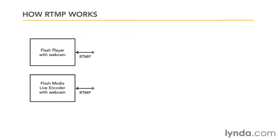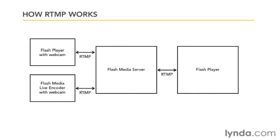Here's a bird's-eye view of how RTMP works. First, the Flash Player contacts the FMS server, and an RTMP connection is opened between them. Then the Flash Player requests a specific video stream. This could be a pre-recorded stream stored on the FMS server itself, or a live stream being broadcast either from another connected Flash client or from a Flash Media Live Encoder. Once FMS receives the request for the stream, it's sent directly to the Flash Player over the RTMP connection.